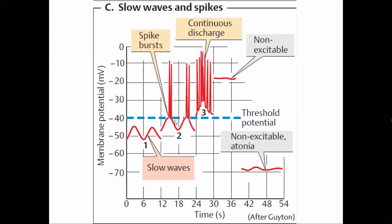To summarize for exam purposes: basic electrical rhythm is the slow undulating fluctuation of membrane potential occurring from minus 65 to minus 45 millivolts. The slow wave is due to the influx of sodium ion. The spike potential is due to the calcium ion. The frequency of the spike potential varies from 1 to 10 and determines the contraction of the smooth muscle. Explaining this with a diagram will help you score more than 90 percent marks.